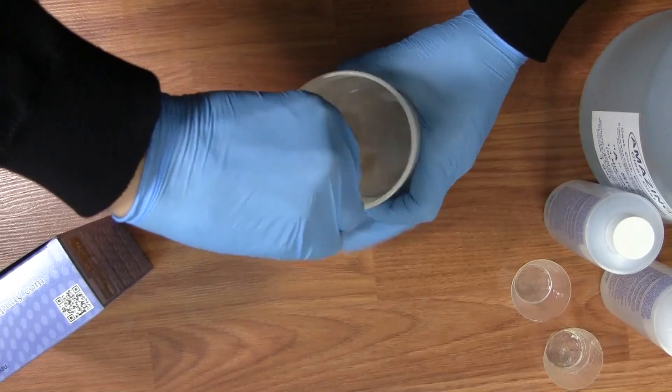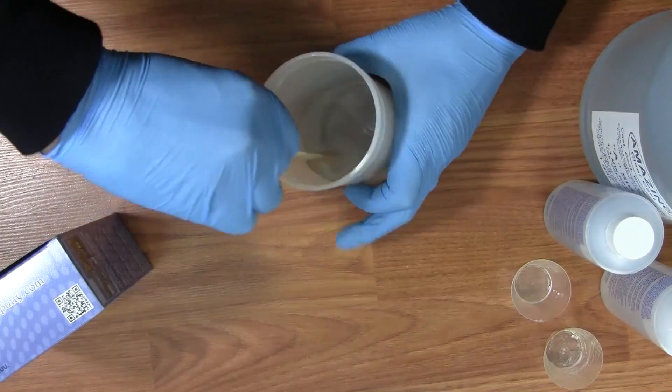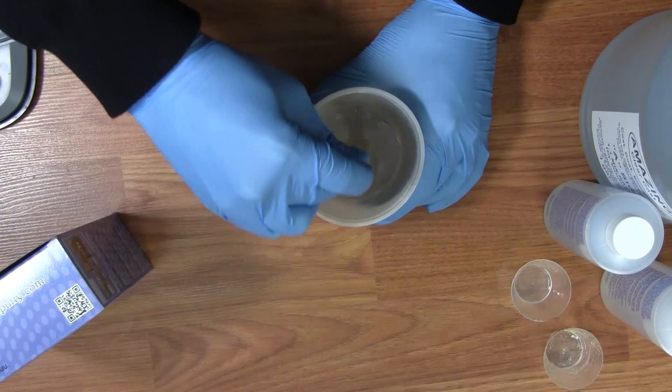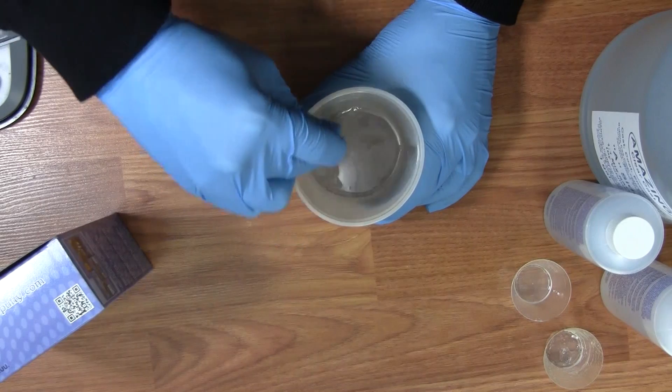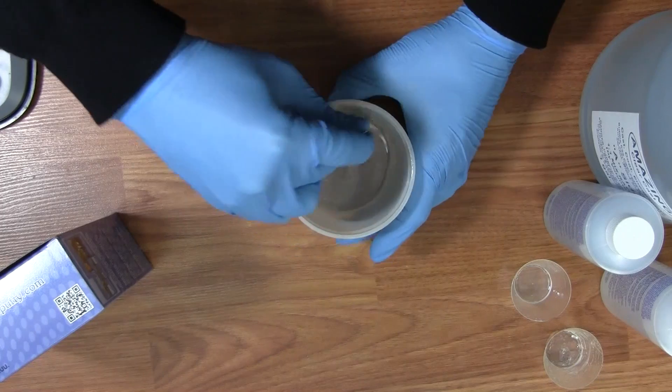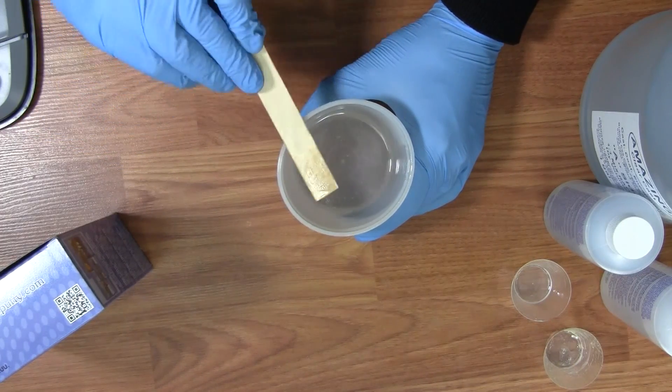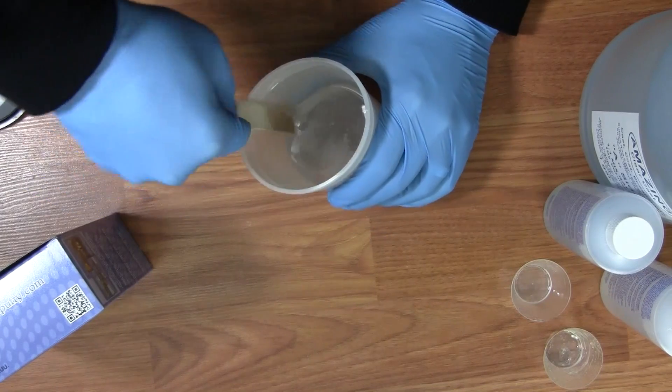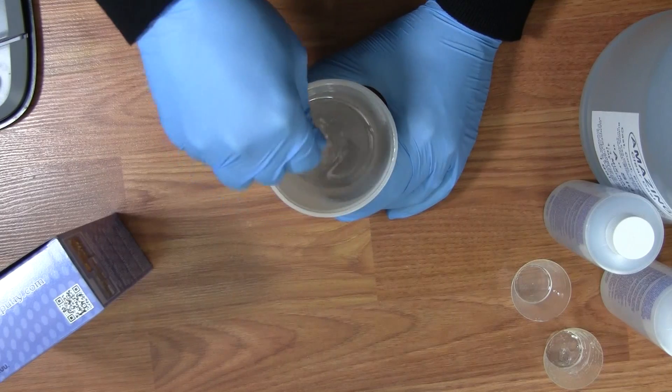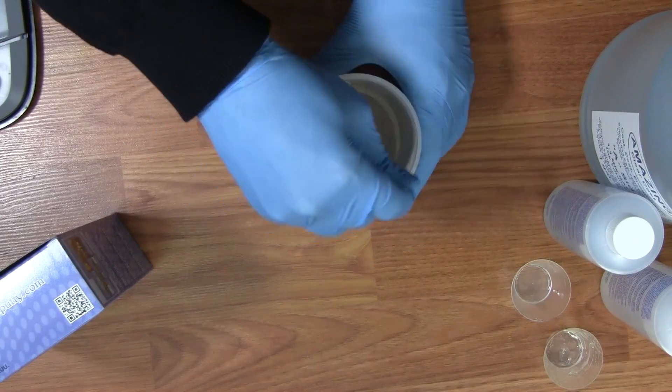You want to make sure to scrape the sides of your cup. And lastly, scrape your stick off. Follow this process a couple times while you thoroughly mix the resin. The entire mixing process should take a minimum two to three minutes.